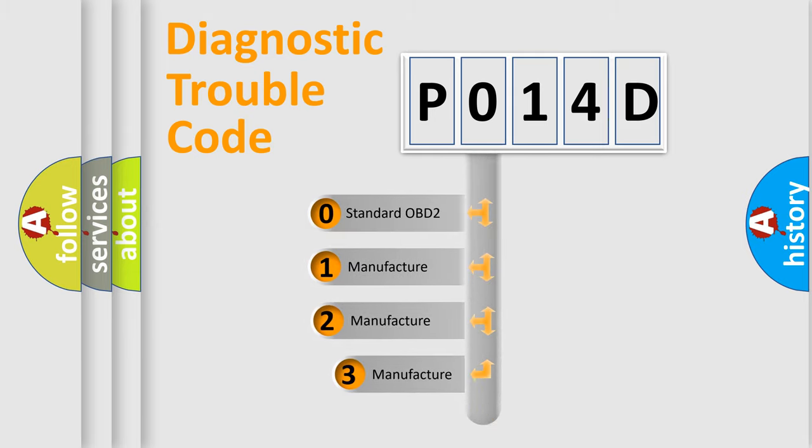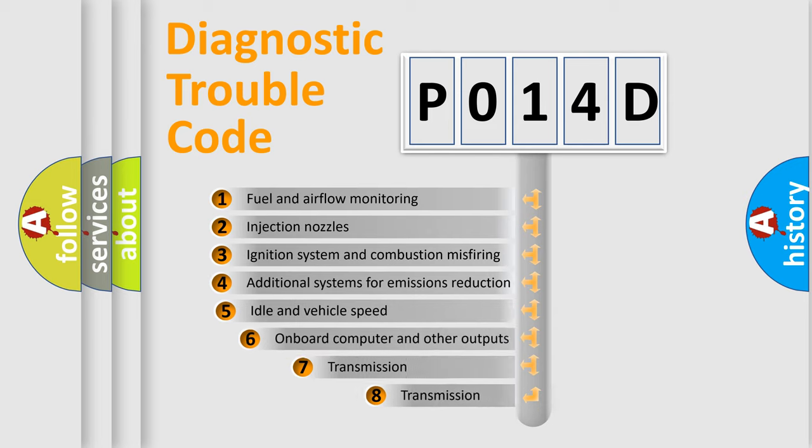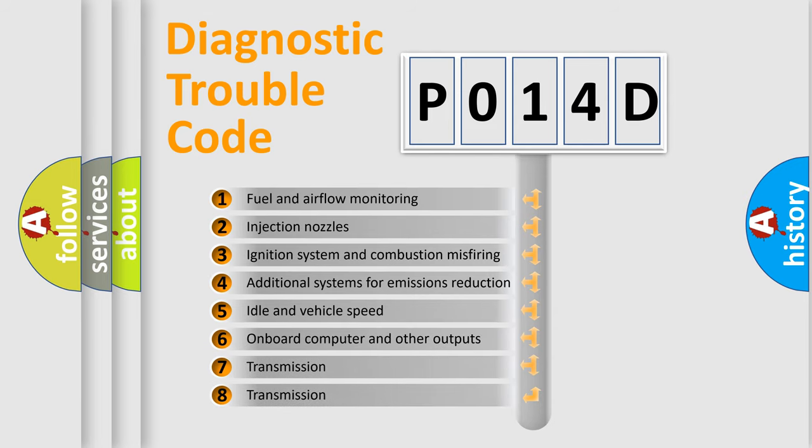If the second character is expressed as zero, it is a standardized error. In the case of numbers 1, 2, 3 it is a manufacturer-specific error expression.